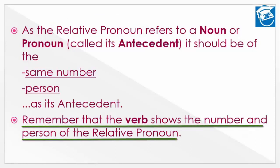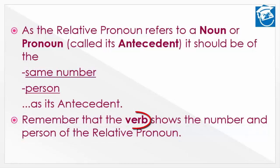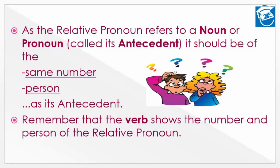Remember that the verb shows the number and person of the relative pronoun. Sentence में जो verb का उपयोग होता है, उससे हम समझ पाते हैं कि हमारा subject या noun/pronoun number में कैसा है — singular या plural — और वो कौन से person में है। Verb यह चीज हमें बताता है। Now these two points we will understand through some examples, और agreement को समझेंगे कि किस प्रकार से relative pronoun और उसका antecedent, verb से जुड़ते हुए sentence form करते हैं।